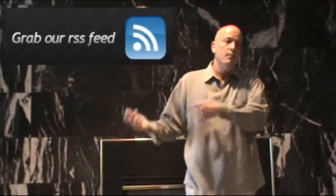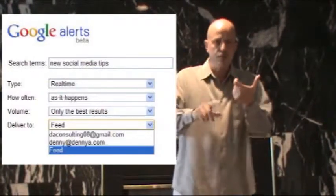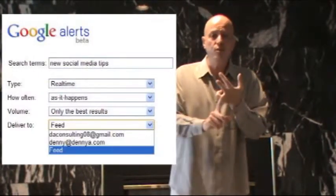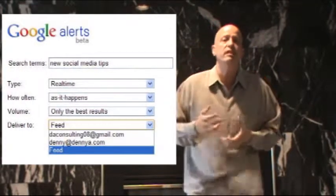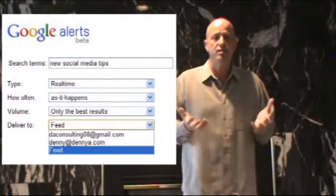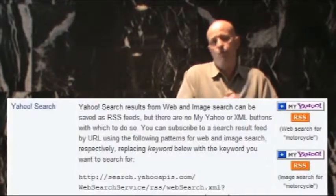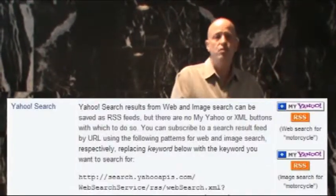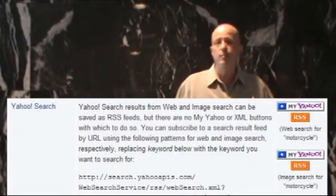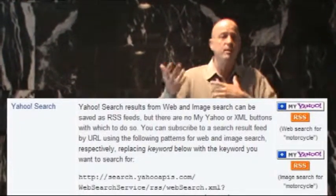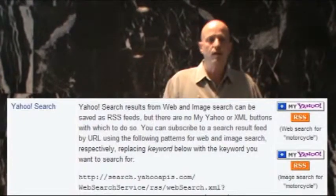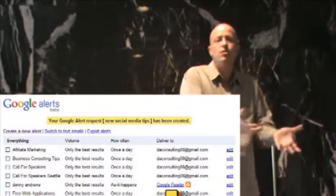So instead of going to the site, you just open up your reader and there's the information. The other thing you can do with a reader is you can set up Google Alerts, Yahoo searches, and Google searches, and have the results of those searches delivered to your reader on a daily basis. So anything that you're trying to learn about, or information you want for your clients, or if you have a particular topic you want to blog about or post updates on Facebook or Twitter, you can set up a search and have those results delivered to your RSS reader.